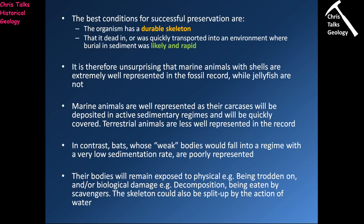A very extreme example of a terrestrial animal that fossilises badly would be bats. Bats have a very thin, very weak skeleton, so it's very unlikely to fossilise successfully. They also live in cave systems which have a very low rate of sedimentation, so when a bat dies its carcass falls to the cave floor and is not covered in protective sediment quickly. It's left exposed to physical processes — like being trodden on — or biological damage such as decomposition or being eaten by scavengers. Bats are therefore absolutely horribly represented in the fossil record.